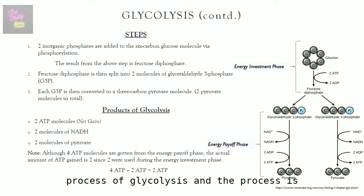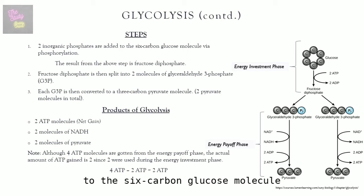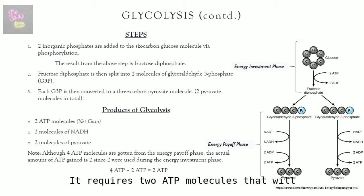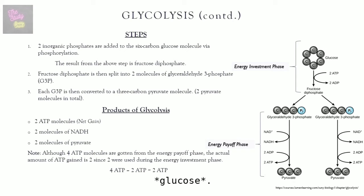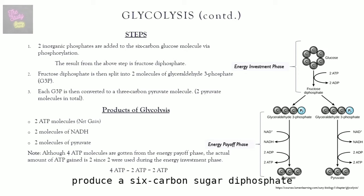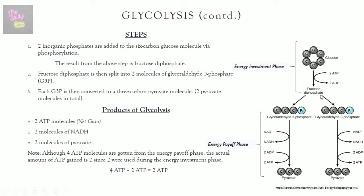The process of glycolysis begins with two inorganic phosphates being added to the six-carbon glucose molecule in a process known as phosphorylation. This requires two ATP molecules, which are broken down into ADP plus inorganic phosphate. It is the inorganic phosphate that is added to glucose. This initial process produces a six-carbon sugar diphosphate molecule — specifically fructose diphosphate.